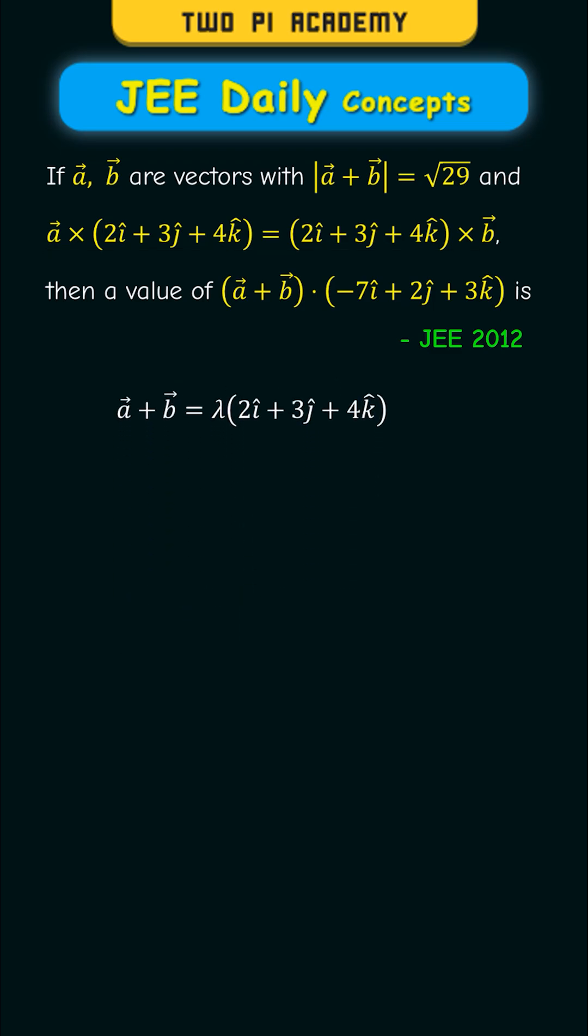Now by calculating the magnitude of this vector, you'll get the value square root of 29, which is the magnitude of vector A plus vector B. Therefore, lambda can only be either plus or minus 1.